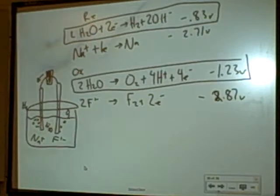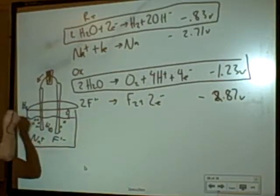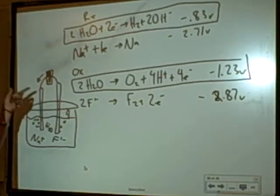All right. So, electrolytic cells are unfavored. You need a battery to drive the reaction. The only thing that really changes is now reduction is happening at the cathode, which is negative. So, you change the sign of the cathode.